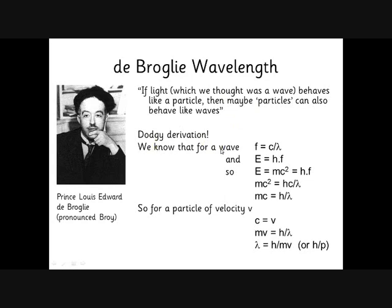So he did this slightly dodgy derivation. He said f equals c over lambda, we all know that, and E equals hf we know that as well. Also we'd come across Einstein's equation, E equals mc squared, so he said well hf is also equal to E, so let's make mc squared equal to hf.